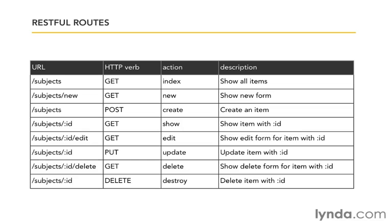The URLs that do still show an action — new, edit, and delete — are conveniences for composing changes in the browser before submitting them to the server. They aren't strictly necessary. For example, a desktop application communicating with your server would request subjects/ID as a GET, get back the resource information, let you make changes, then submit a PUT — never calling the edit action at all. Just a GET followed by a PUT. But in a browser, assembling those changes is easiest with a web form, and that's why we have new, edit, and delete.